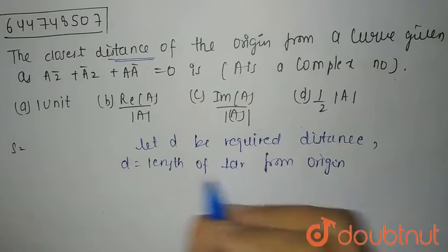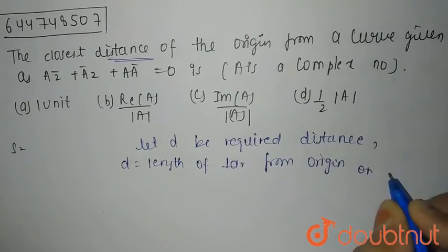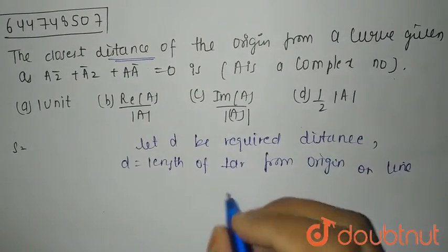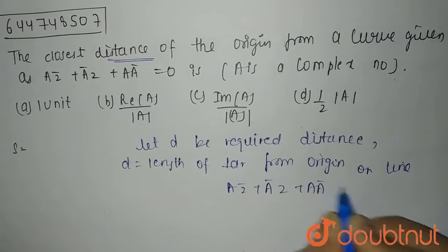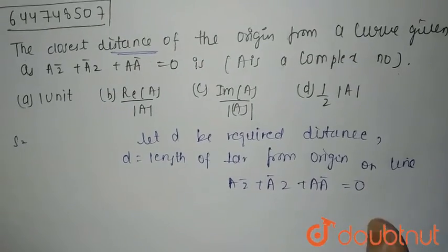Length is nothing but length of the perpendicular from origin on the line that is az bar plus a bar z plus a a bar equals 0. This is the shortest distance.